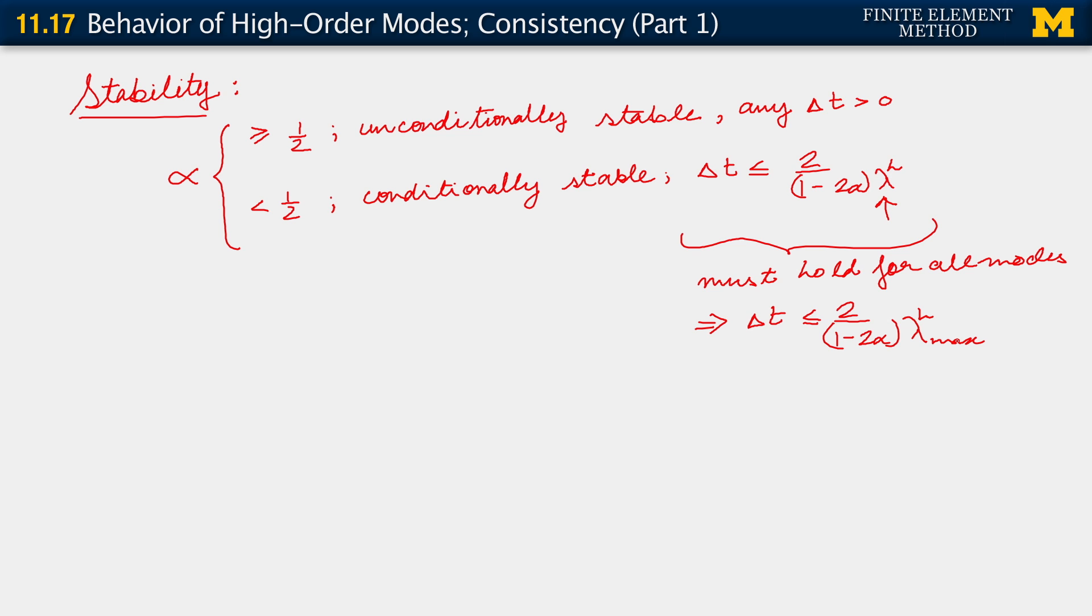The final result we noted is that lambda h and therefore lambda h max also varies as the element size to the minus 2. And what this implies then, what this means for our methods is that the spatial discretization does indeed affect our time integration. In particular, it affects our choice of time step.